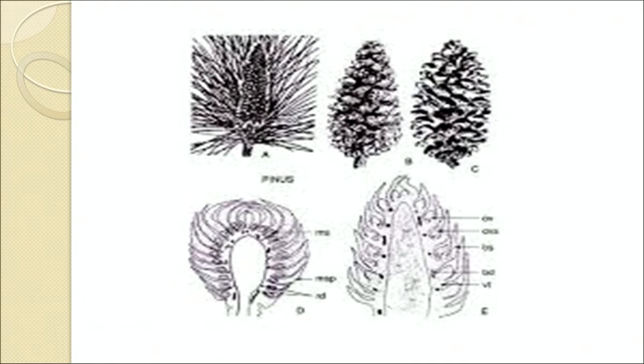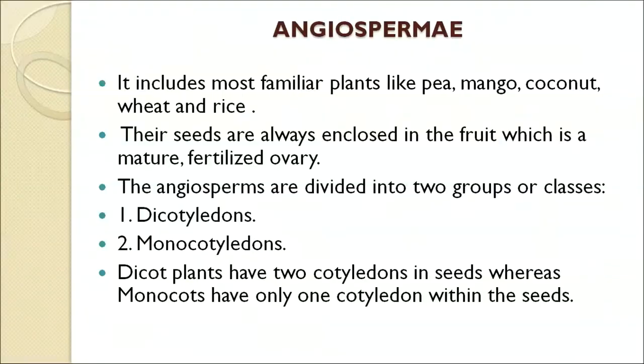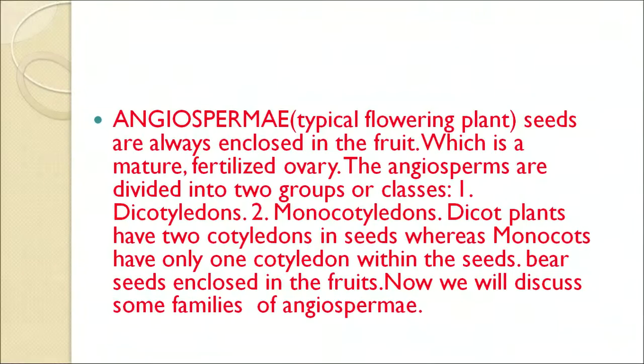Now we move on to angiosperms — the next family of plants. It includes most familiar plants like pea, mangoes, coconut, wheat and rice. It's a typical flowering plant. Seeds are always enclosed in the fruit, which is a mature fertilized ovary. The angiosperms are divided into two main classes: dicotyledons and monocotyledons. Dicot plants have two cotyledons in seeds, whereas monocot plants have only one cotyledon within the seeds.